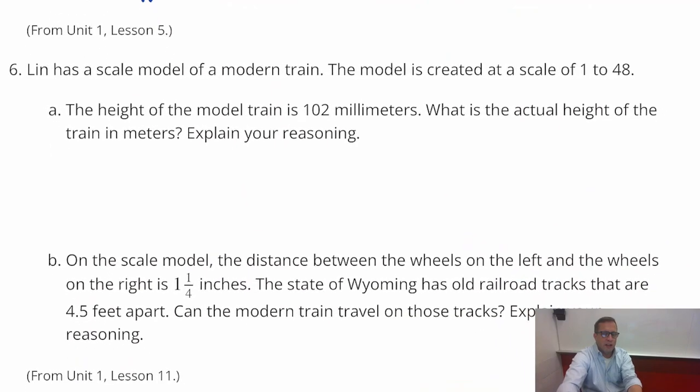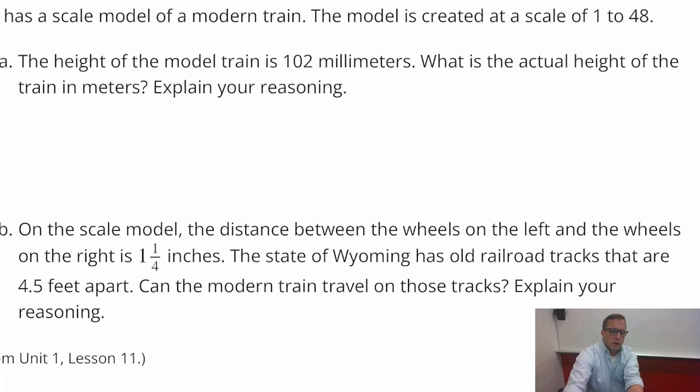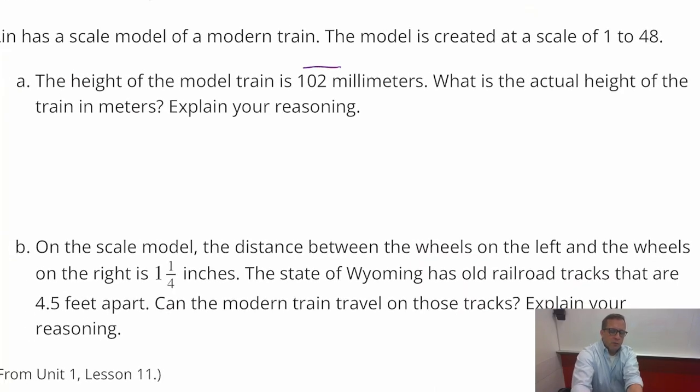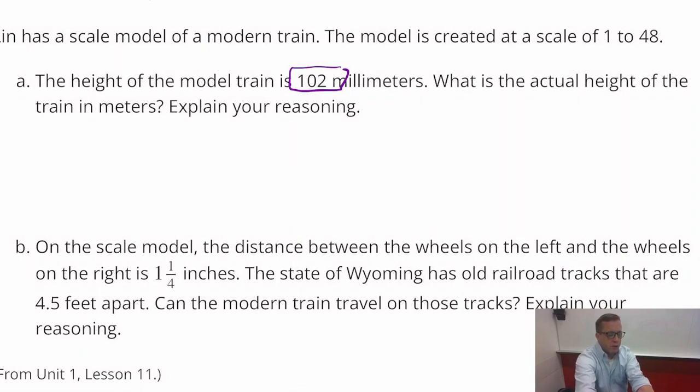Number six. Lynn has a scale model of a modern train. The model is created on a scale of one to forty-eight. The height of the model train is 102 millimeters. What is the actual height? What's the actual height of the train in meters? Explain your reasoning. So since it has a scale of one to forty-eight, I'm going to multiply this number by forty-eight. So I'm going to do 102 times 48. And I got 4,896.